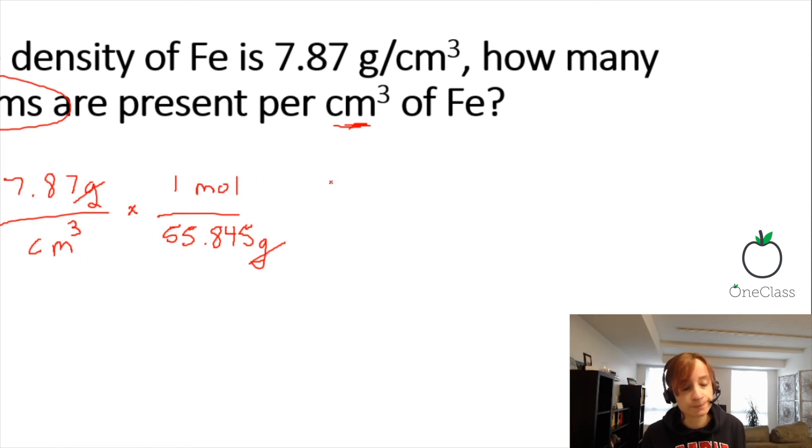We're almost there. We just need to convert moles into atoms. The way we are going to do that is we're going to use Avogadro's number. We have 6.02 times 10 to the 23. This number always stays the same. The only thing that you can change is the number of entities.